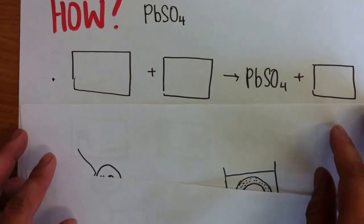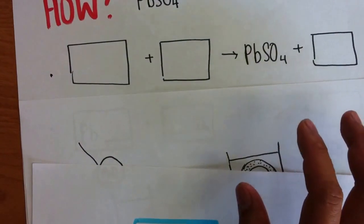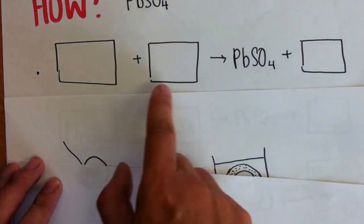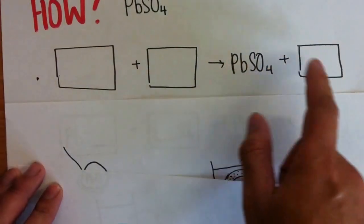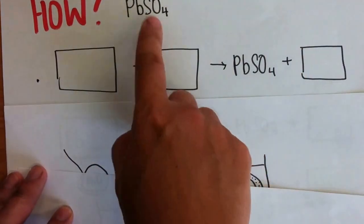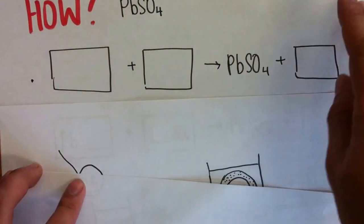So how do we solve it? We solve it by using a puzzle box like this. Same thing, we always ask ourselves, I want PbSO4, how can I get it?